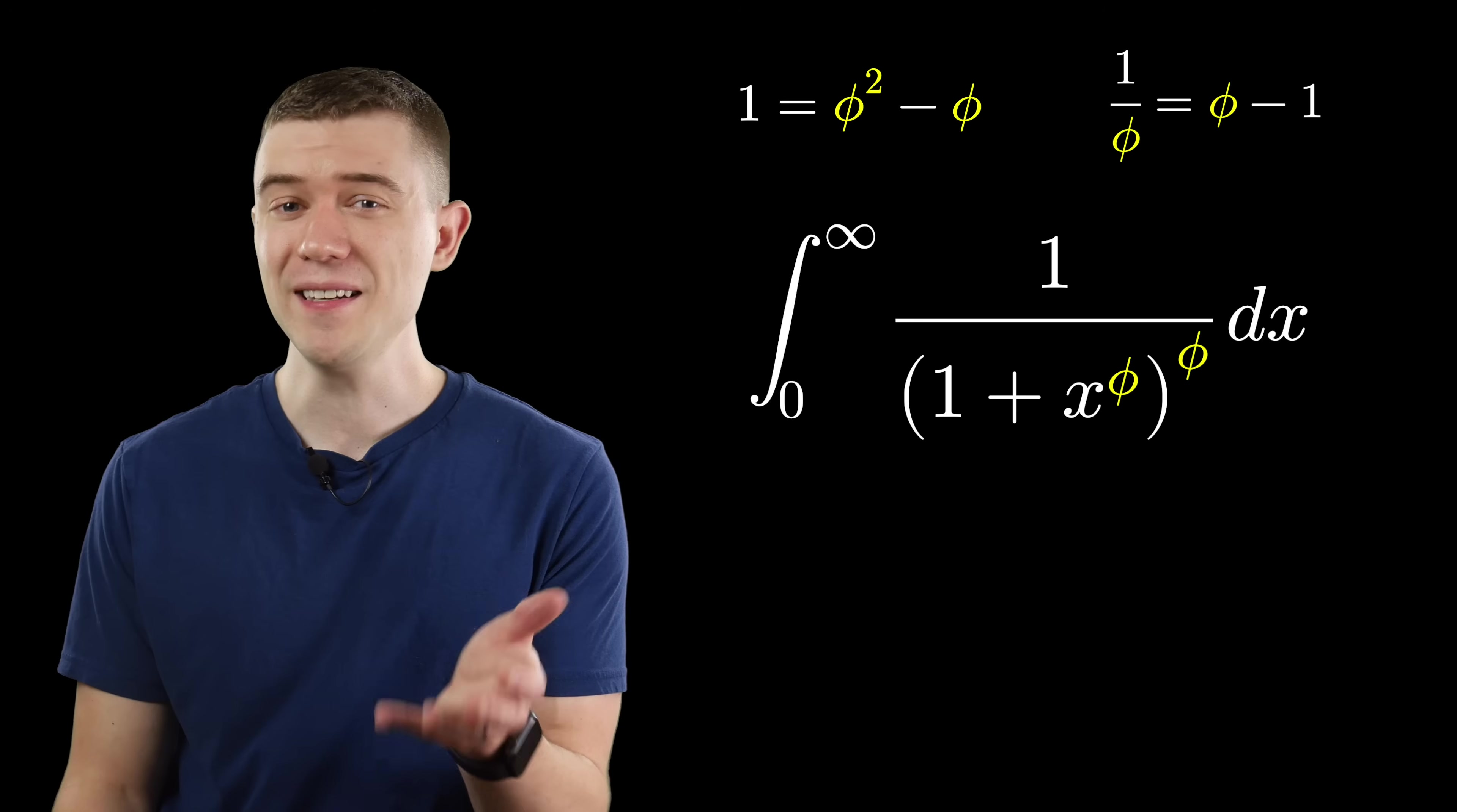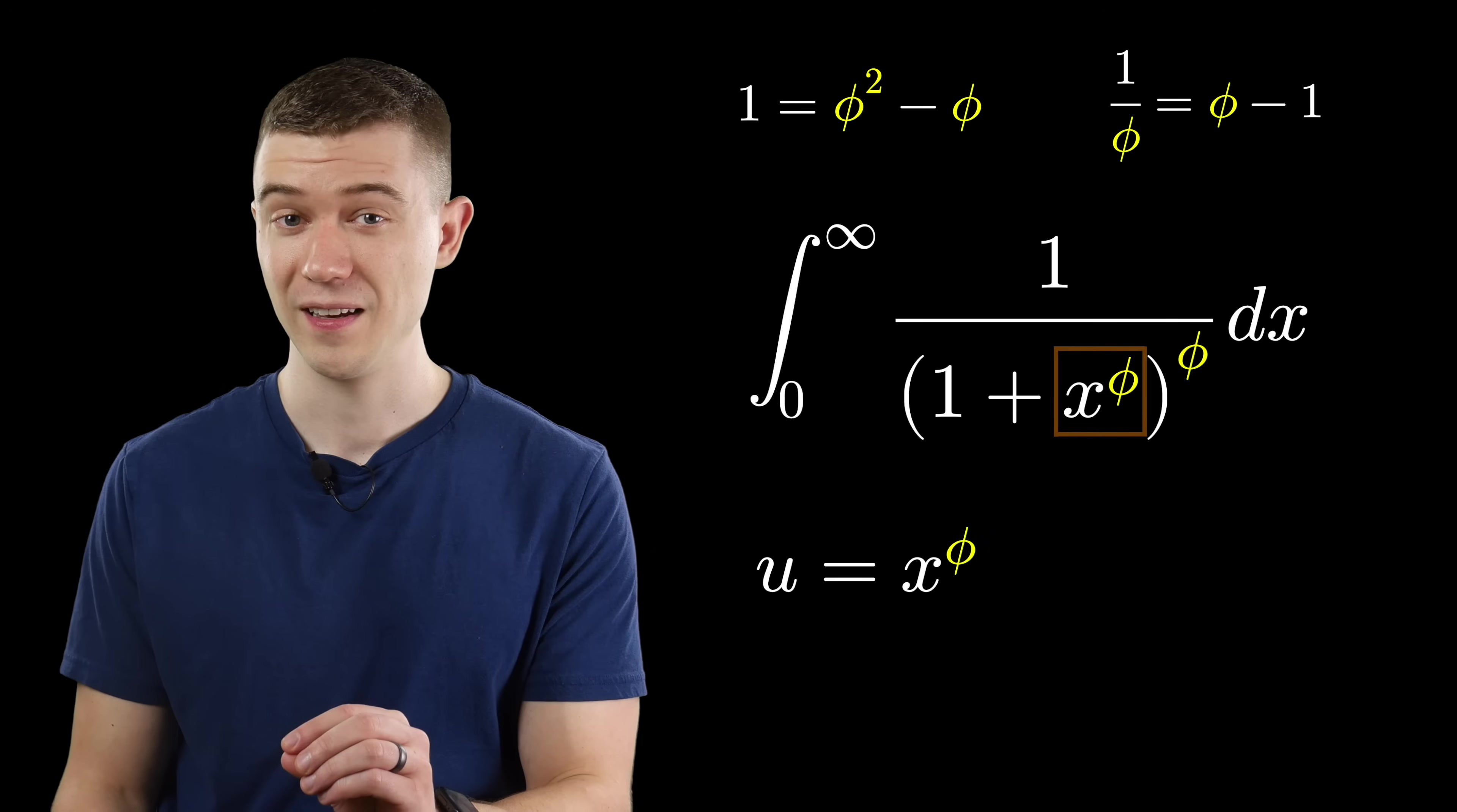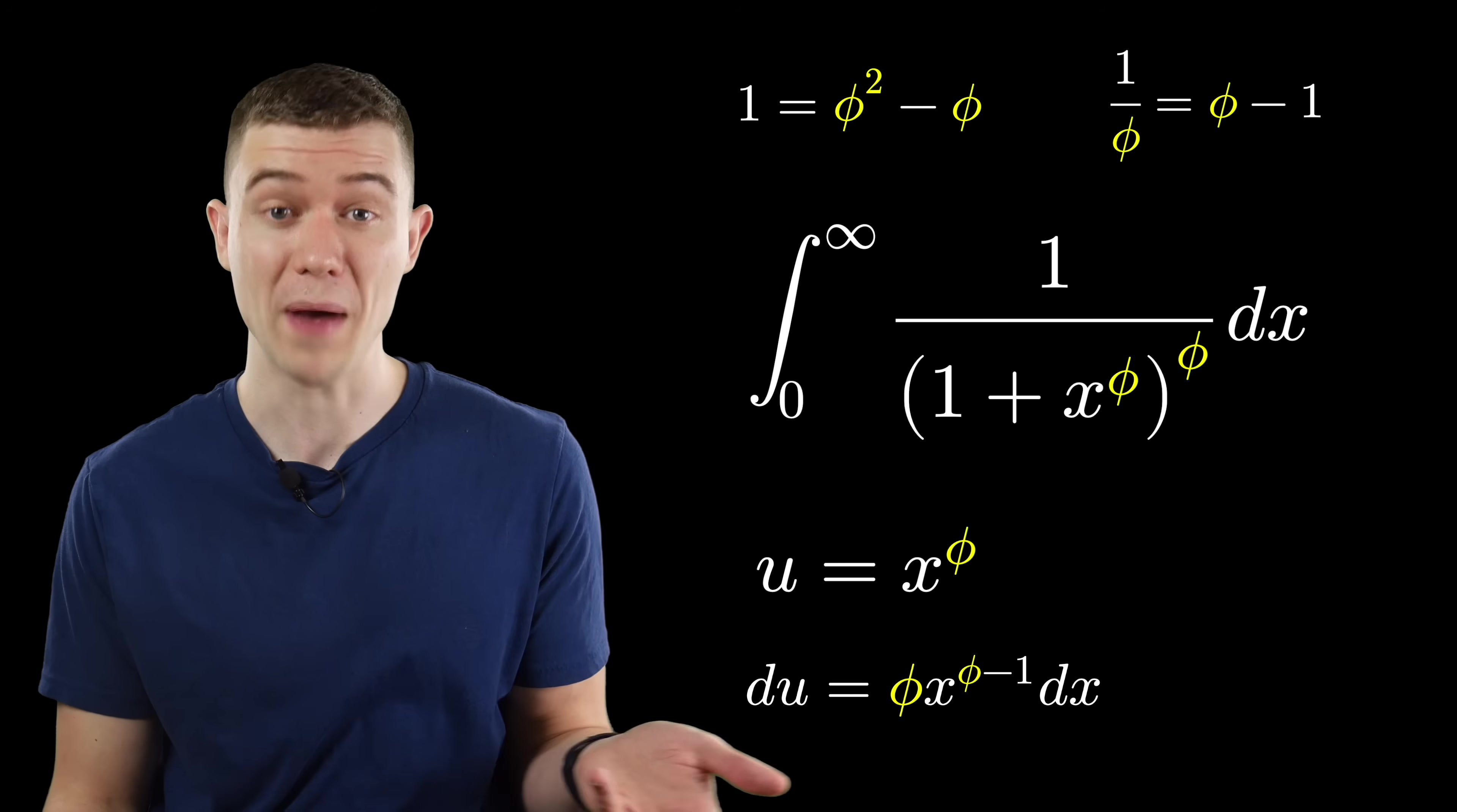Keeping that in mind, how should we tackle this integral? One way is via a very slick substitution. Let's let u equal x to the phi. That makes du phi times x to the phi minus 1 dx, using the power rule.